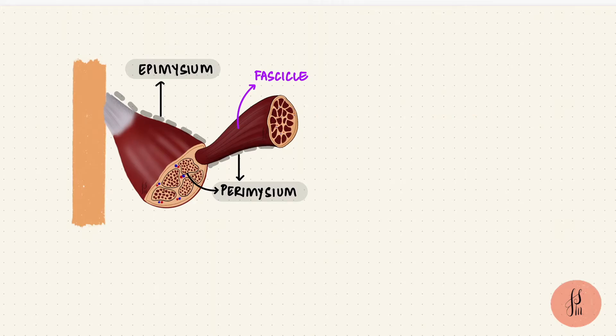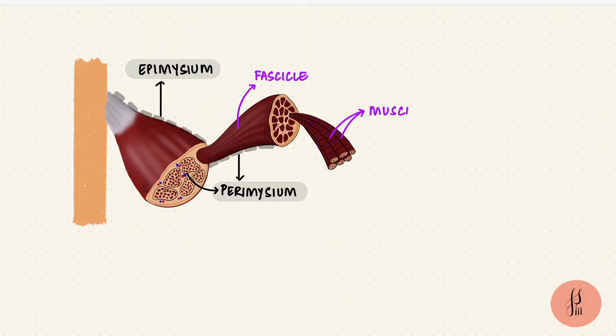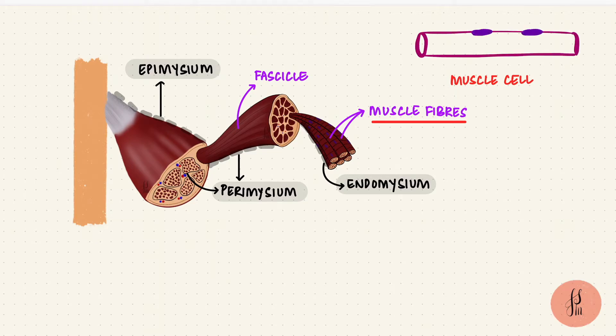The fascicles are bundles of muscle fibers and the connective tissue around each fiber is called the endomysium. Muscle fibers are actually skeletal muscle cells. These cells are cylindrical and they've got multiple nuclei at the periphery.